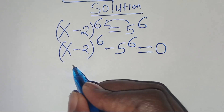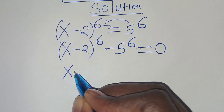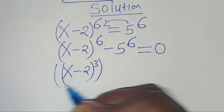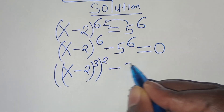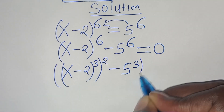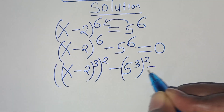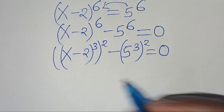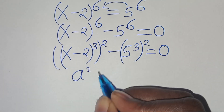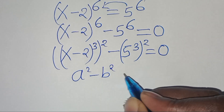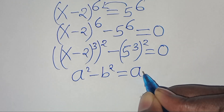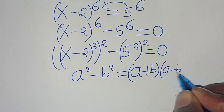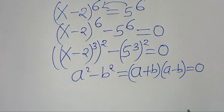We can express (x minus 2)^6 as [(x minus 2)^3]^2 minus [5^3]^2, equal to 0. This equation is in the form of a squared minus b squared, which we can express as (a plus b) multiplied by (a minus b), equal to 0.